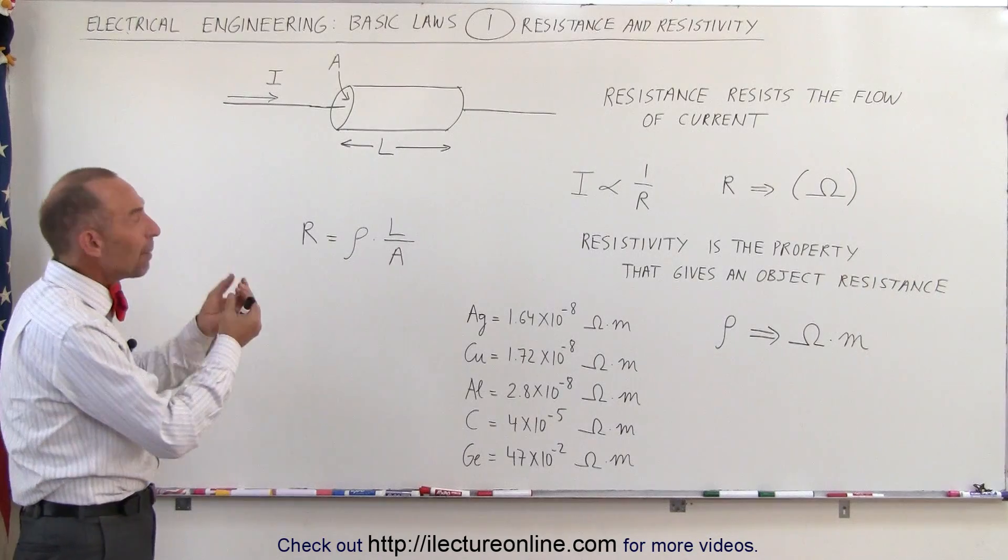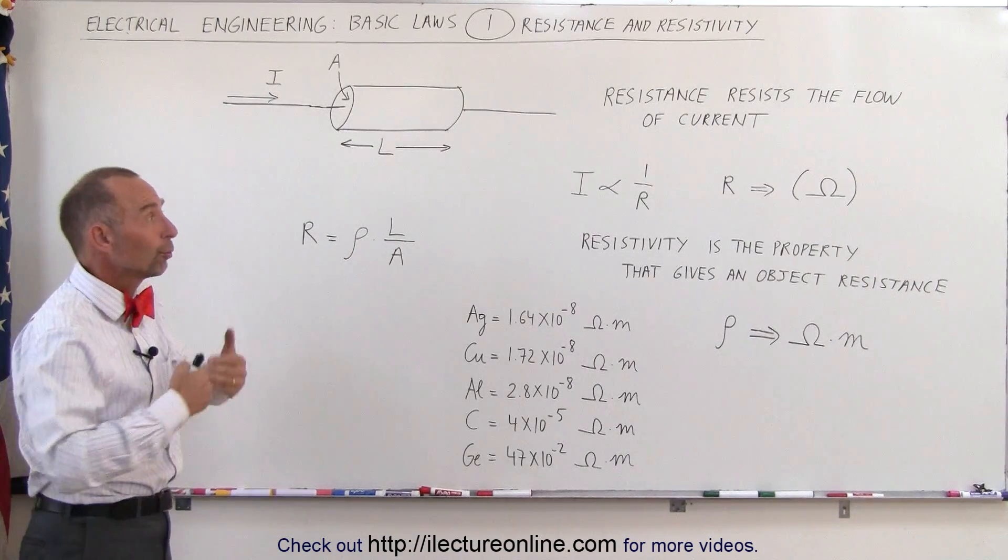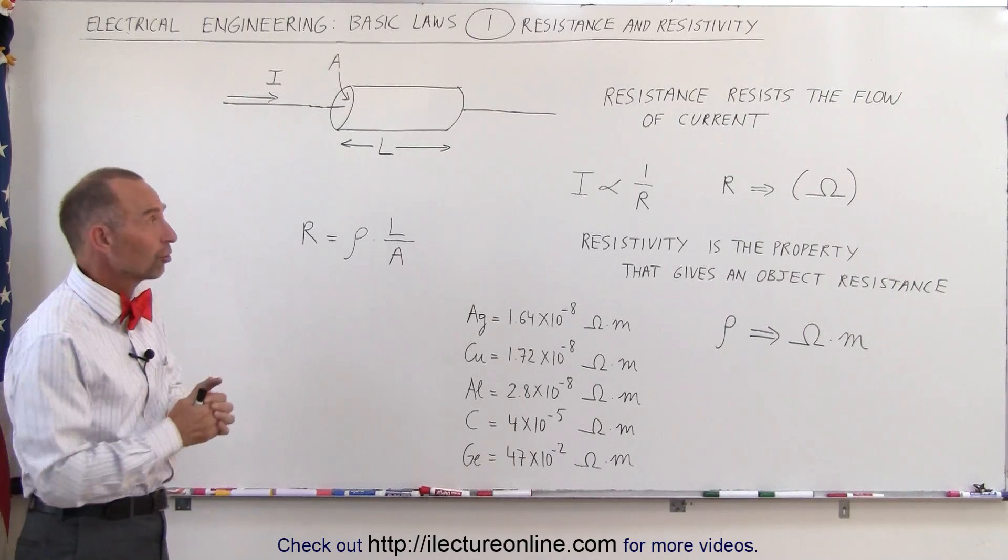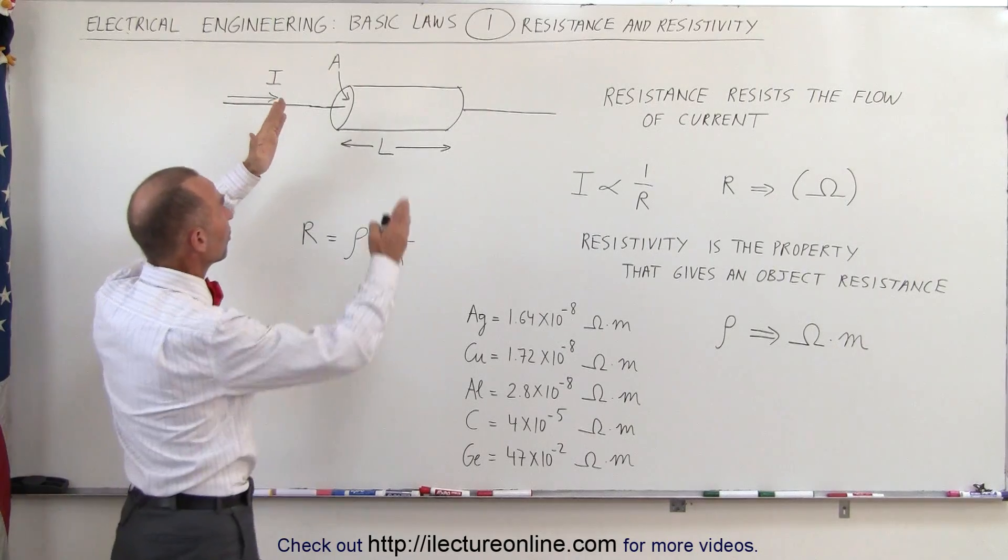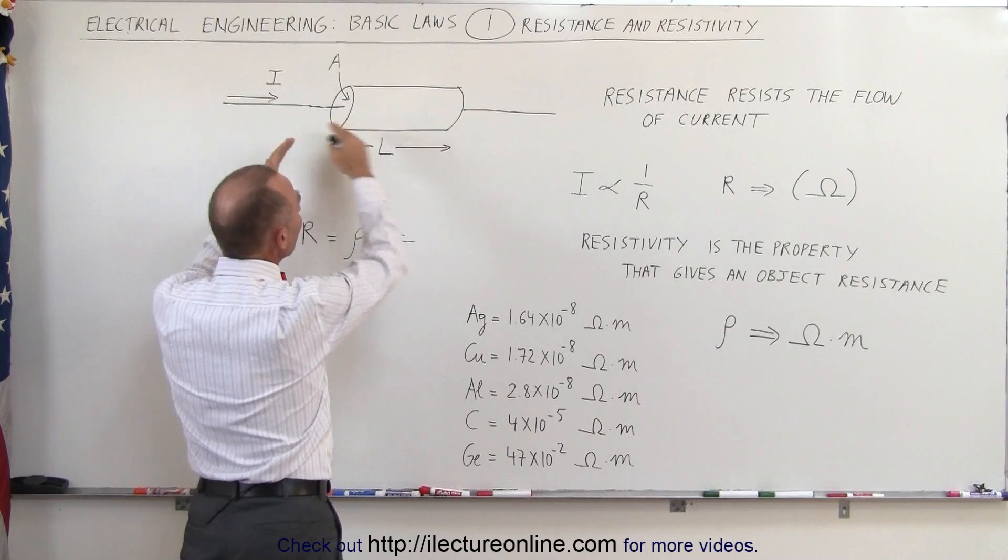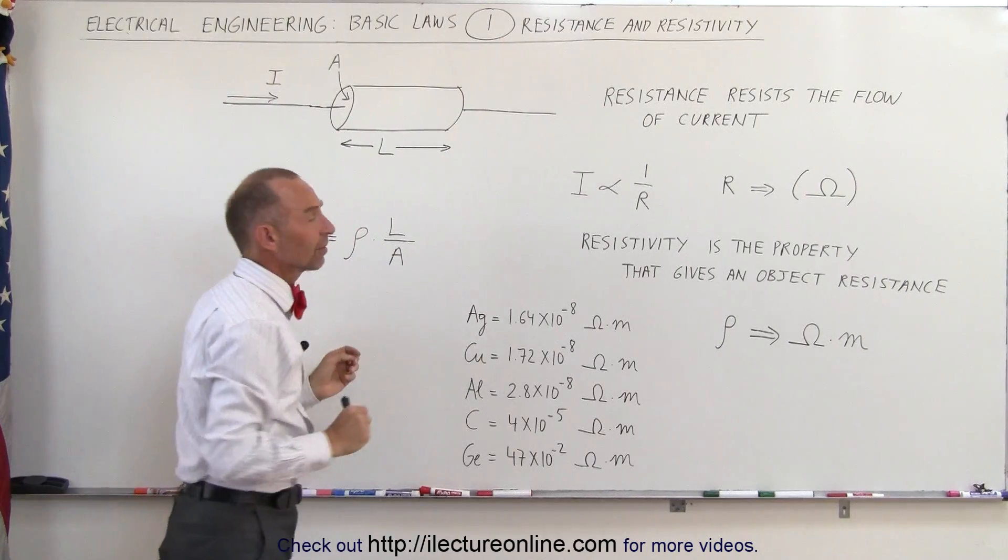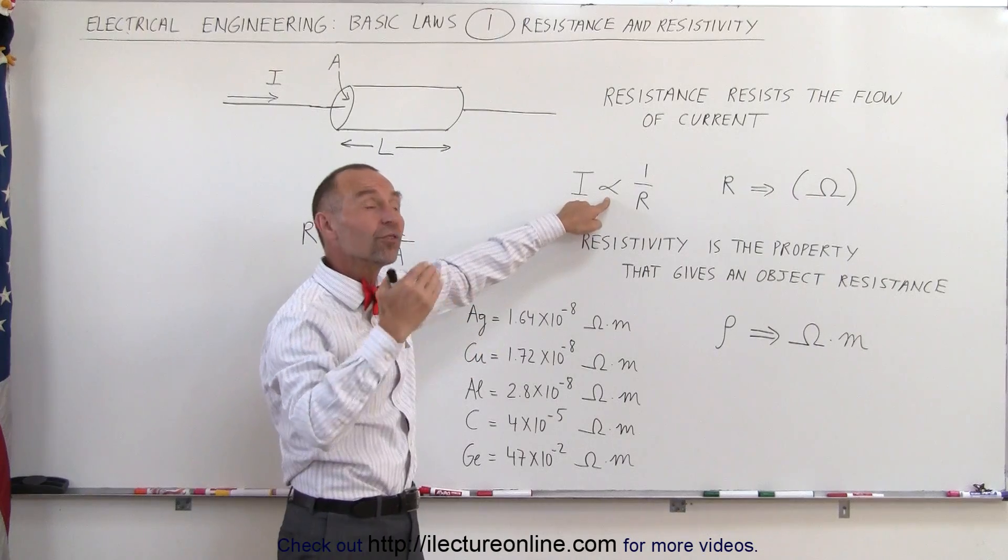Resistance is the property of a material that resists the flow of current or electrical charges in a circuit. Let's say we have a circuit here that carries a certain amount of current and comes upon an object that has resistance. The resistance will limit the amount of current that can flow through the object. The amount of current that can flow is proportional to one over the resistance.